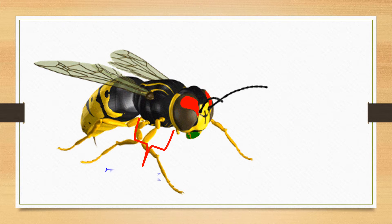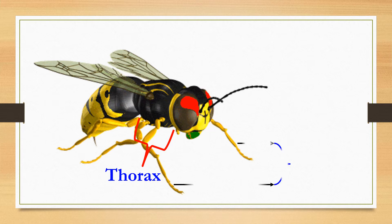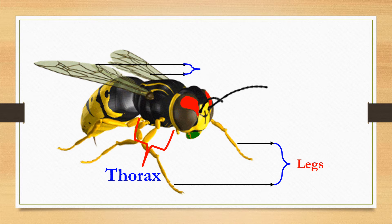Thorax: the thorax is the middle region of the body. It bears three pairs of legs and two pairs of wings.